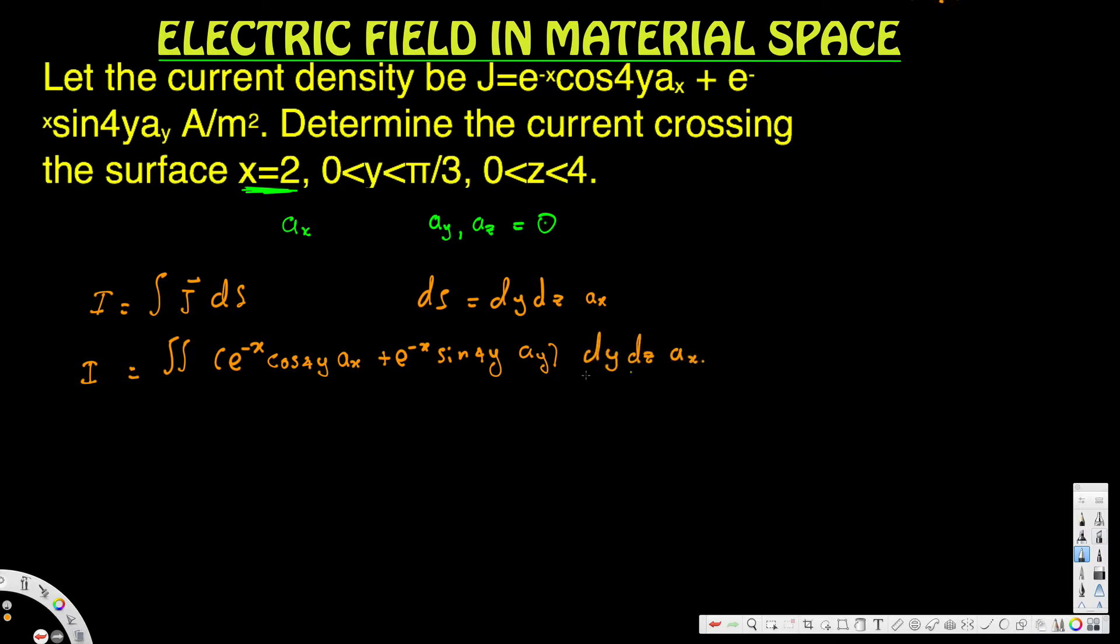Here we have the ay component, so we said we're only looking at the x direction. If we have y or z direction, that's going to be zero, so this is zero.